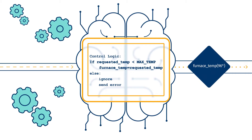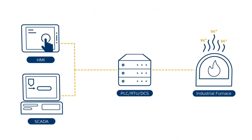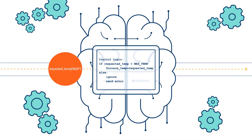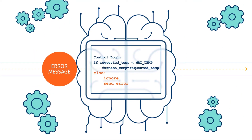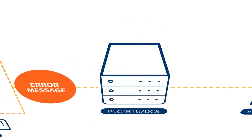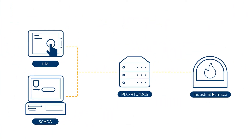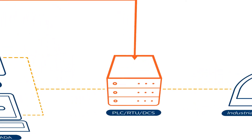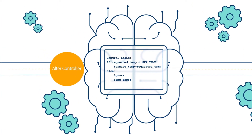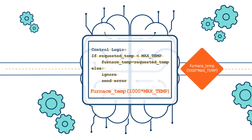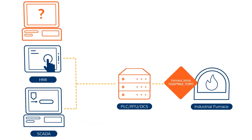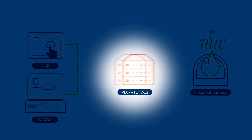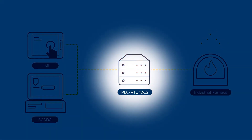In OT networks, the controllers manage all processes, enforcing safety restrictions and ensuring the continuous and safe operation of industrial processes. In a properly engineered environment, the controller will keep the process stable against unsafe commands from the operator. However, if the controller itself is compromised or unauthorized changes are made to its logic, that can have catastrophic results. Despite being the most sensitive and critical part of the network, controllers are surprisingly under-protected.